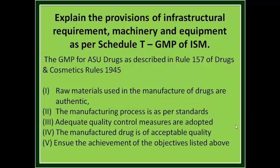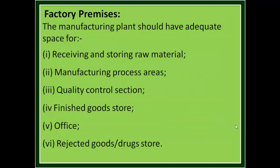Question 1: Explain the provisions of infrastructure requirement, machinery and equipment as per Schedule T. The GMP for ASU drugs as described in Rule 157 of Drugs and Cosmetics Rules 1945 states: one, raw materials used in manufacture of drugs are authentic; two, the manufacturing process is as per standards; three, adequate quality control measures are adopted; four, the manufactured drug is of acceptable quality; five, ensure achievement of the objectives listed above.